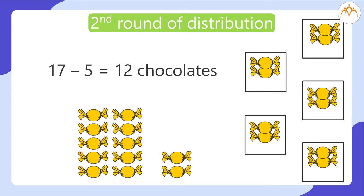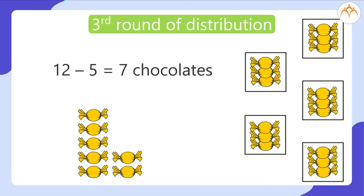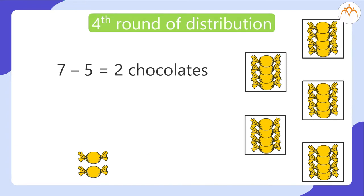Can you see there is repeated subtraction of 5 from the total number of chocolates? Following the same process, after the third round I am left with 12 minus 5 equal to 7 chocolates, and after the fourth round I am left with 7 minus 5 equal to 2 chocolates. Now, is it possible to divide the remaining 2 chocolates equally among 5 friends? Certainly not. And there ends the division process.